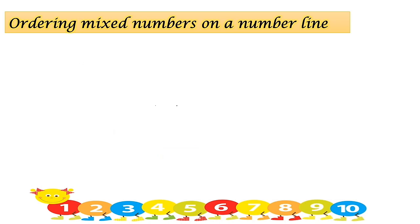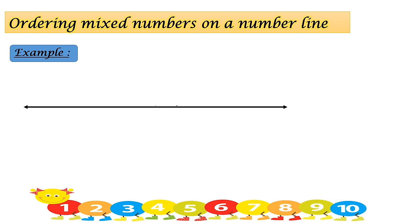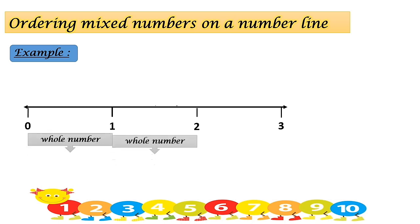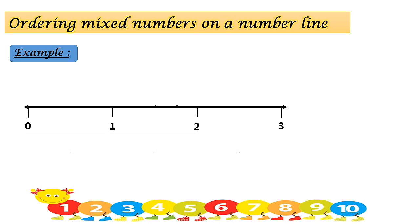Let us now look at another example. This is a number line from zero to three, and between each two numbers it is one whole number section. Our number now is two and a half. We first look at number two on the number line — here is the number two — so the fraction will be between two and three.